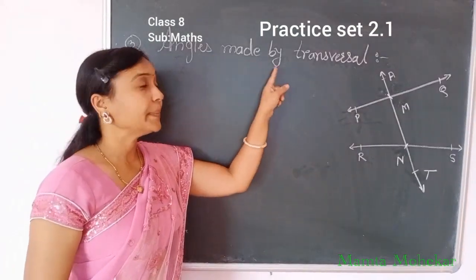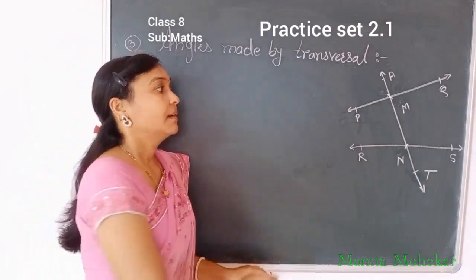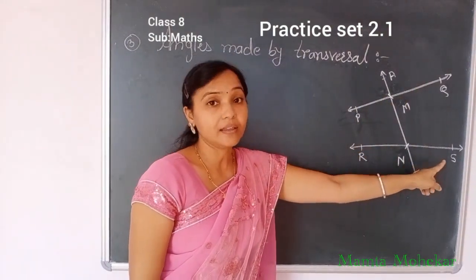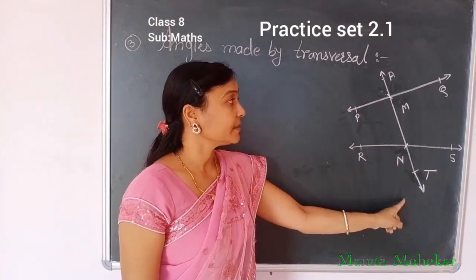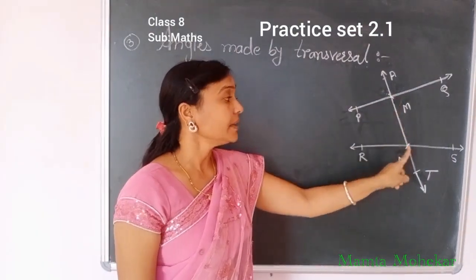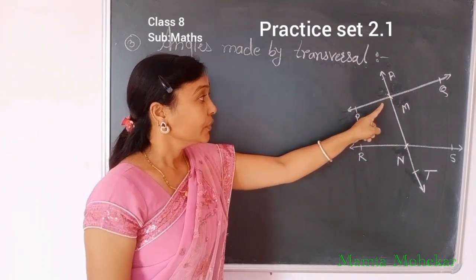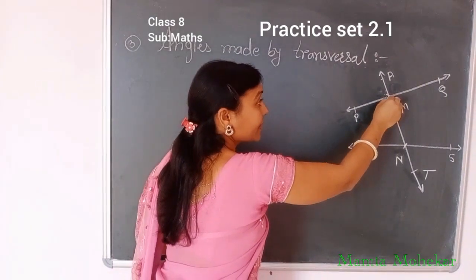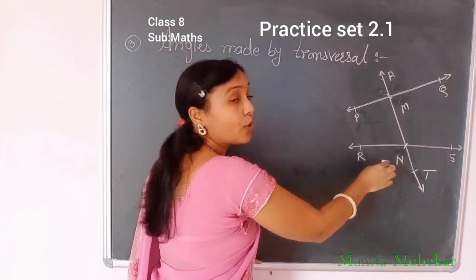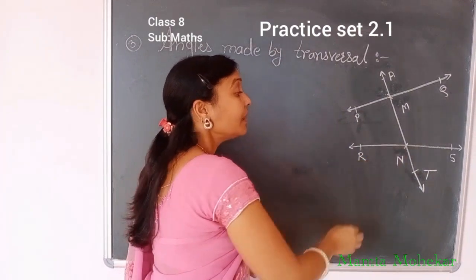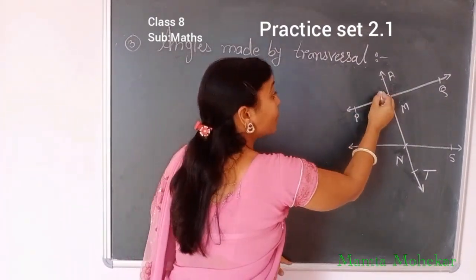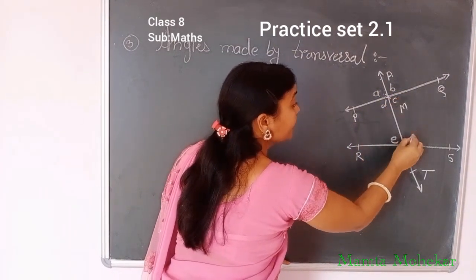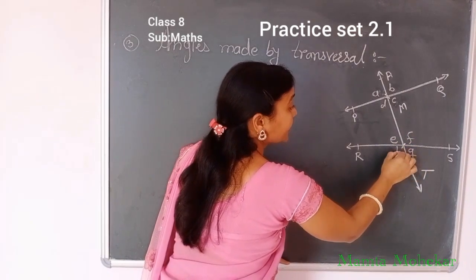These are the angles made by transversals. In this figure, line T is the transversal of line PQ and line RS, because line T intersects them in two distinct points M and N. Therefore, we get four angles at point M and four angles at point N. We call them angles A, B, C, D at point M, and angles E, F, G, H at point N.